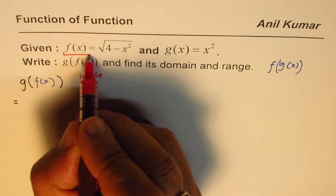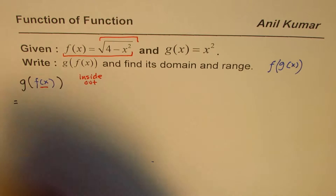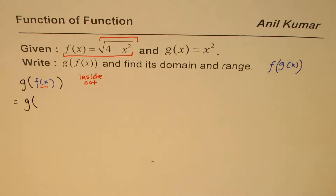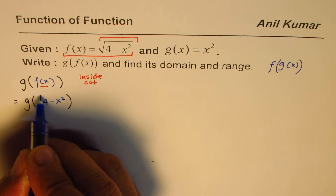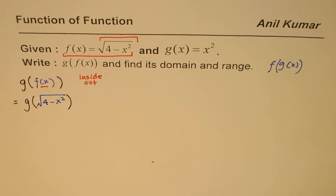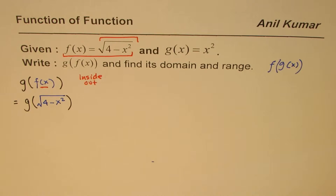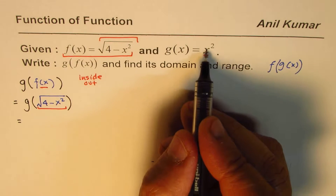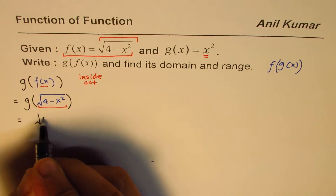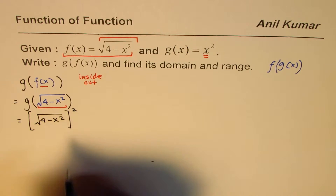Now inside we have f of x, which is this function. So f of x will be replaced by that part. We'll get this function as g of — so what is f of x? The inside function is square root of 4 minus x square. So that is g of this. Now we know g of x is x square, which means all this is going to replace x. So we are saying g of square root of 4 minus x square should be: square root of 4 minus x square, whole squared.